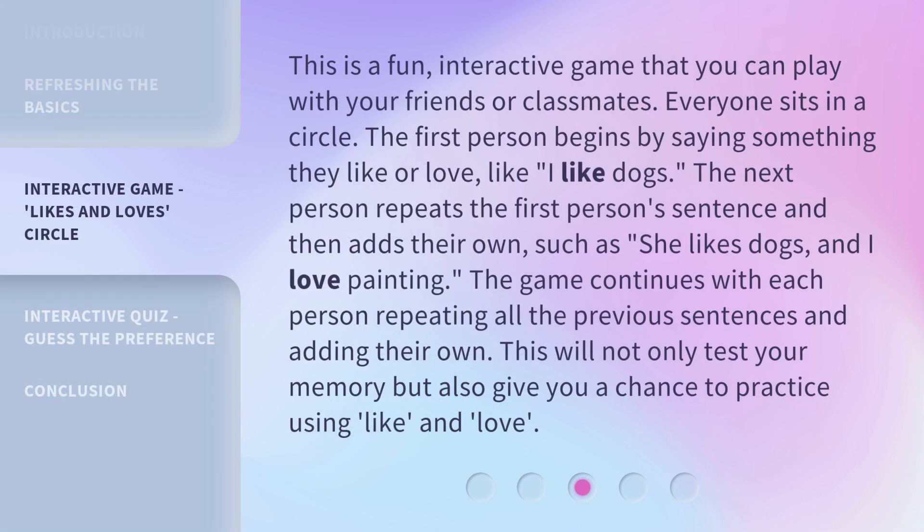This is a fun, interactive game that you can play with your friends or classmates. Everyone sits in a circle. The first person begins by saying something they like or love, like 'I like dogs.' The next person repeats the first person's sentence and then adds their own, such as 'She likes dogs, and I love painting.' The game continues with each person repeating all the previous sentences and adding their own. This will not only test your memory, but also give you a chance to practice using 'like' and 'love.'